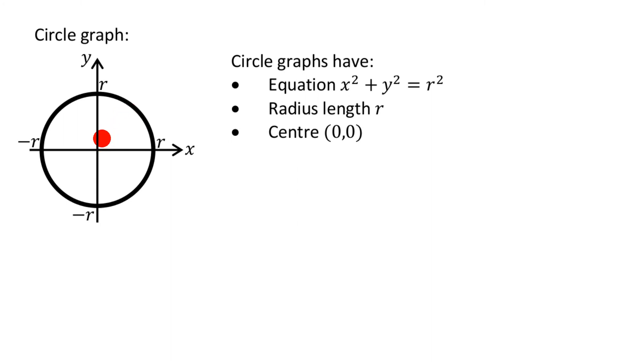From there to there is 4, from there to there is 4, which also means that point on the x-axis is 4, that point on the y-axis is 4, and that's minus 4, and that's minus 4.